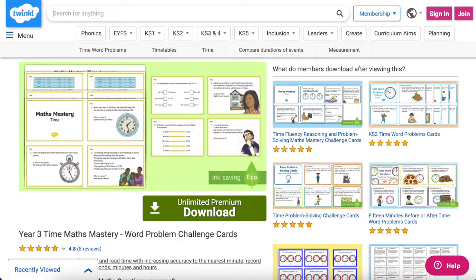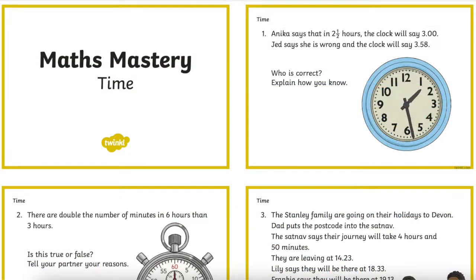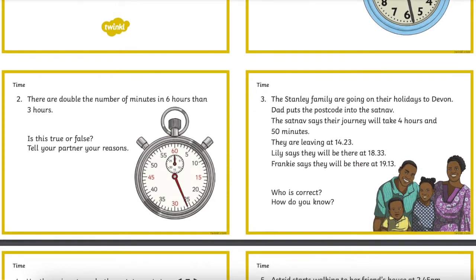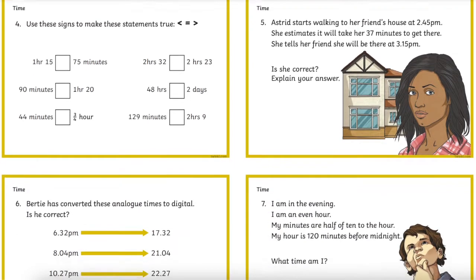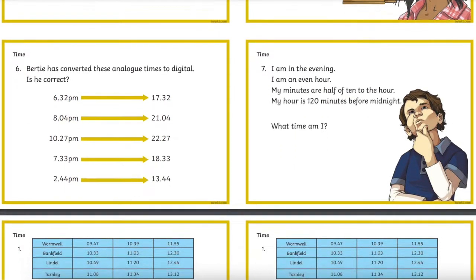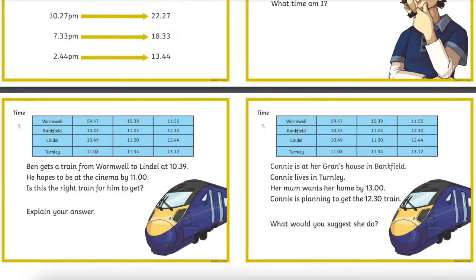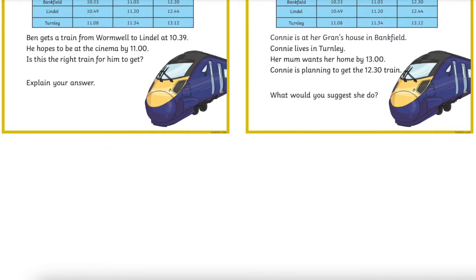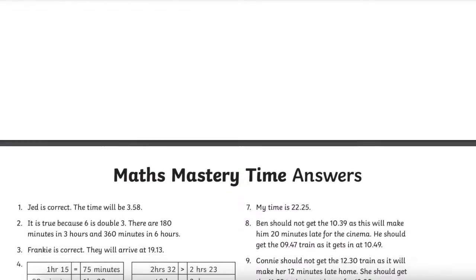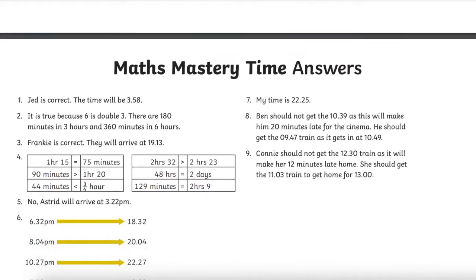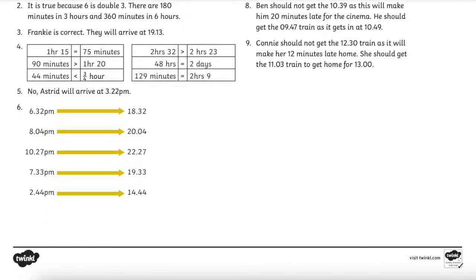If you're looking for a mastery approach, then the Year 3 Time Maths Mastery Word Problems Challenge Cards are exactly what you're looking for. In this pack you'll find a series of word problem cards with time maths questions that are perfect for your time topic lessons. This resource comes with nine question cards as well as an answer sheet, allowing you to quickly and easily check your class's answers. You could even try to use these cards as part of a mid or end of term knowledge review.